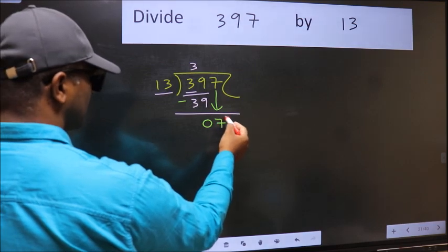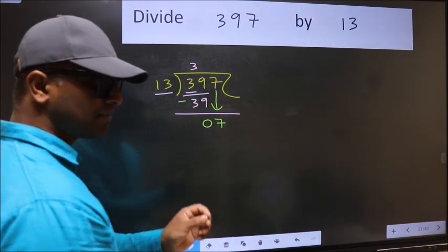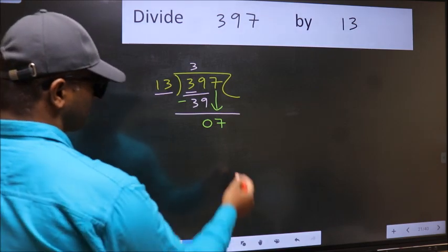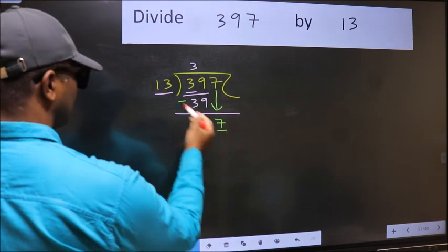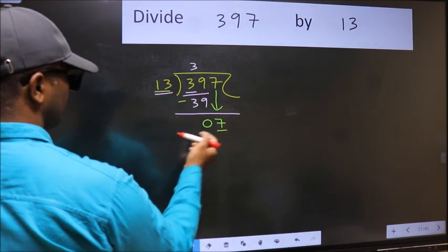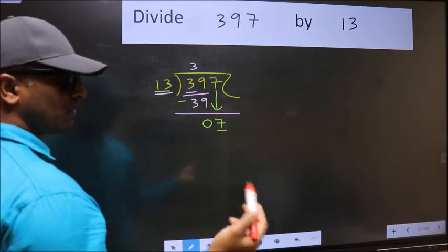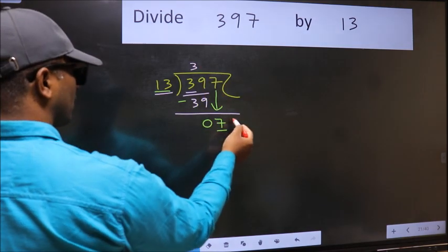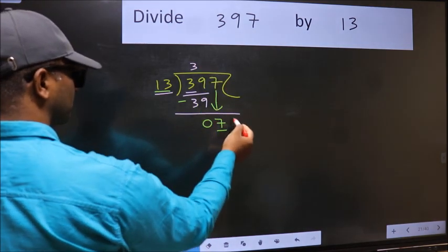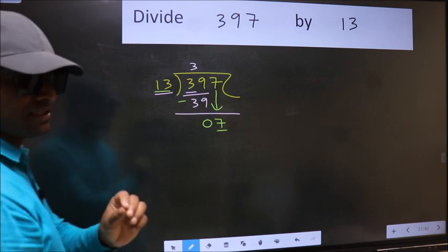After this step, the mistake happens. And the mistake is this. Here we have 7 and here 13. 7 is smaller than 13. So what many do is they directly put dot and take 0, which is wrong.